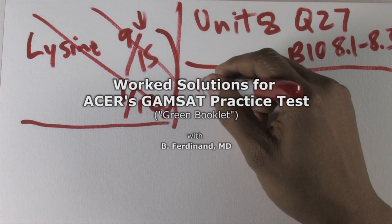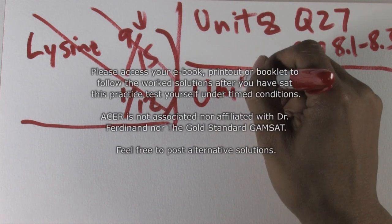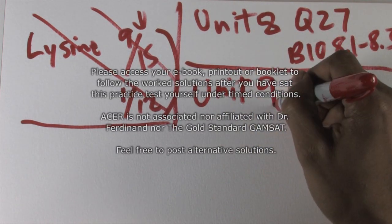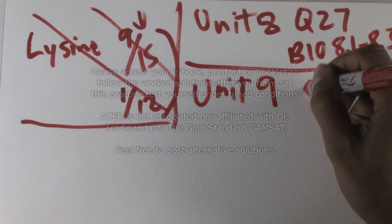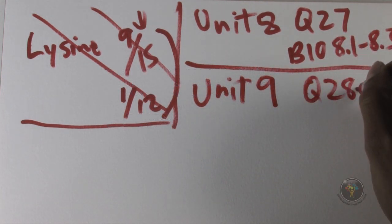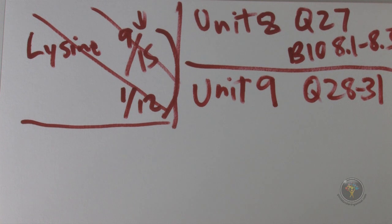We're moving on to unit number nine, questions 28 to 31. In order to fly, flies have to shiver pre-flight because they have to achieve a certain thoracic temperature. So there's the curve.